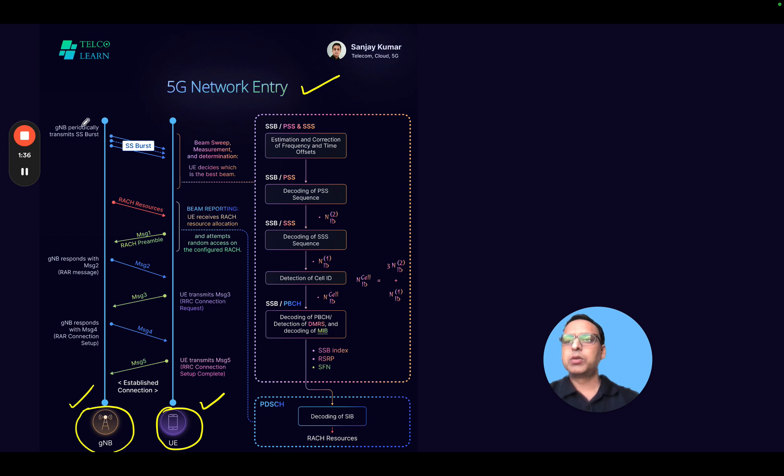The GnodeB is periodically transmitting something called SSBurst. This SSBurst includes three things: PSS, SSS, and PBCH.